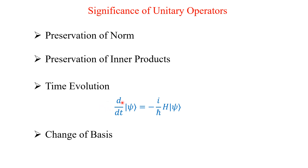The Schrödinger equation is iℏ ∂/∂t |ψ⟩ = H|ψ⟩. When you bring iℏ to the other side, it will become minus i over ℏ, and in that way you can find the time evolution. Also, we can change the basis of the vector — that is, we can change from position representation to momentum representation, and vice versa.